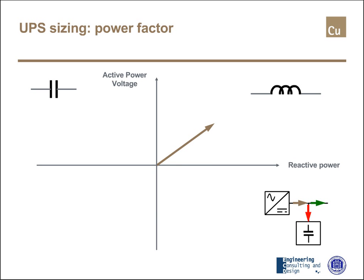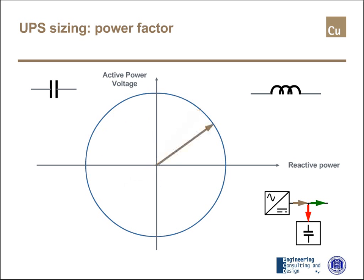The maximum current that can be managed by the UPS electronics has no limit in phase displacement. With reference to the inverter, in the plane of active power and reactive power, the working range is a circle like the blue one shown. But the phase displacement of the filter current is fixed because the filter is basically a capacitor, so the difference between these two currents is fixed.